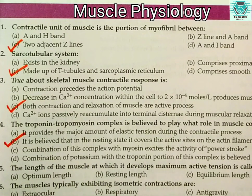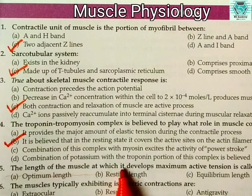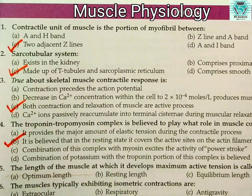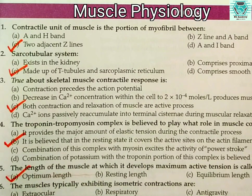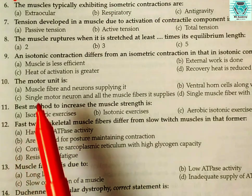Number five: the length of the muscle at which it develops maximum active tension is called — optimum length, resting length, equilibrium length, or initial length? The right answer is (a), optimum length.